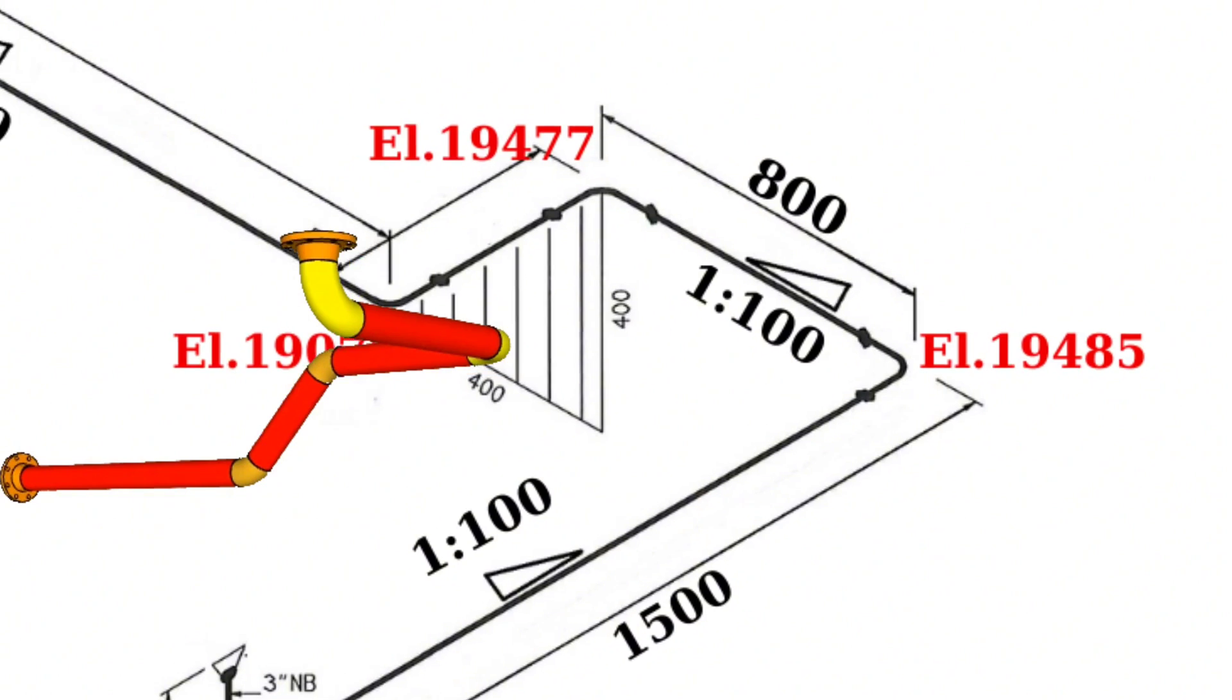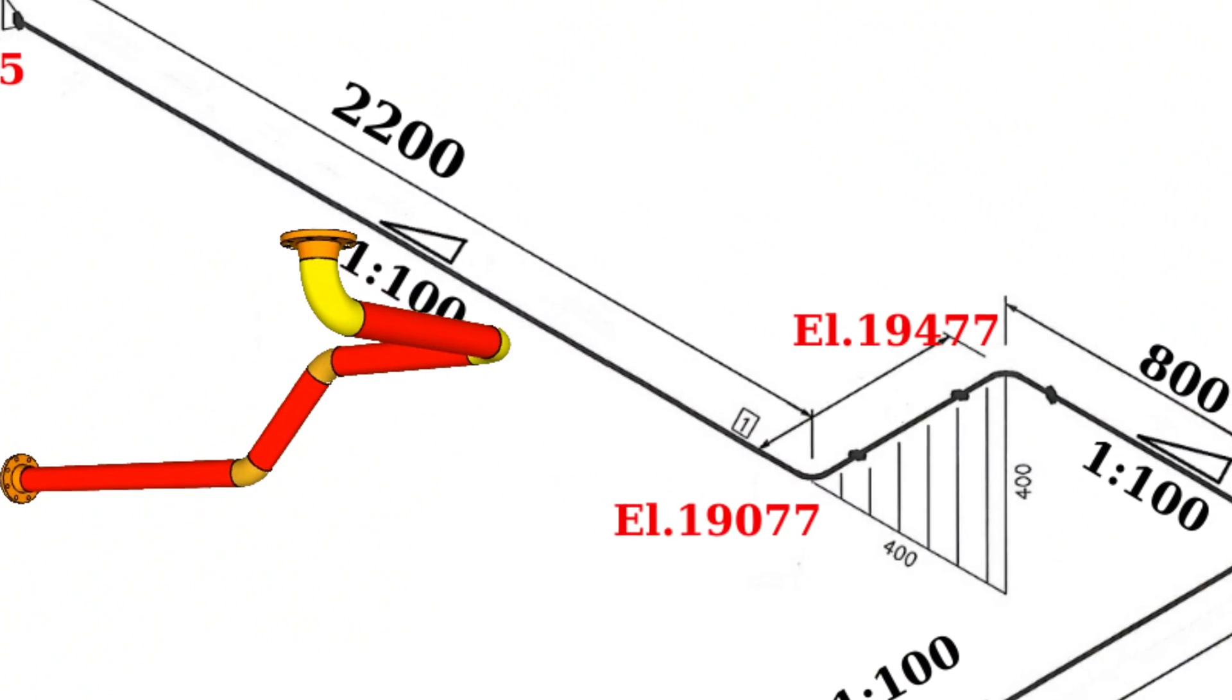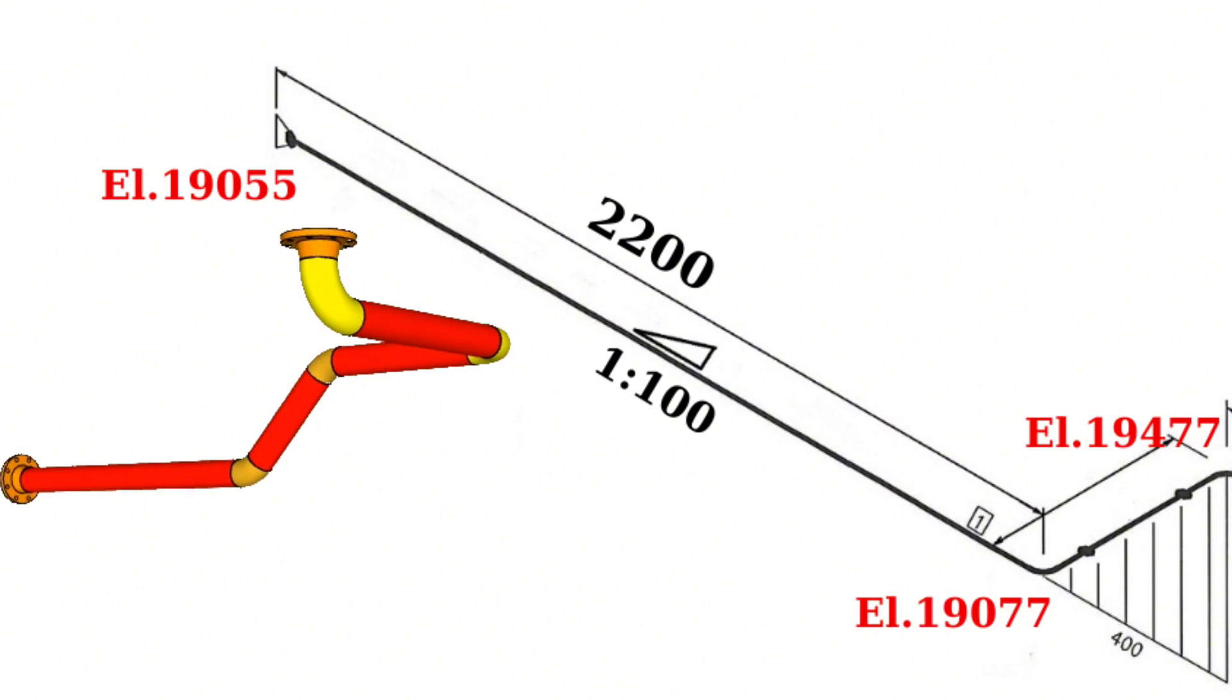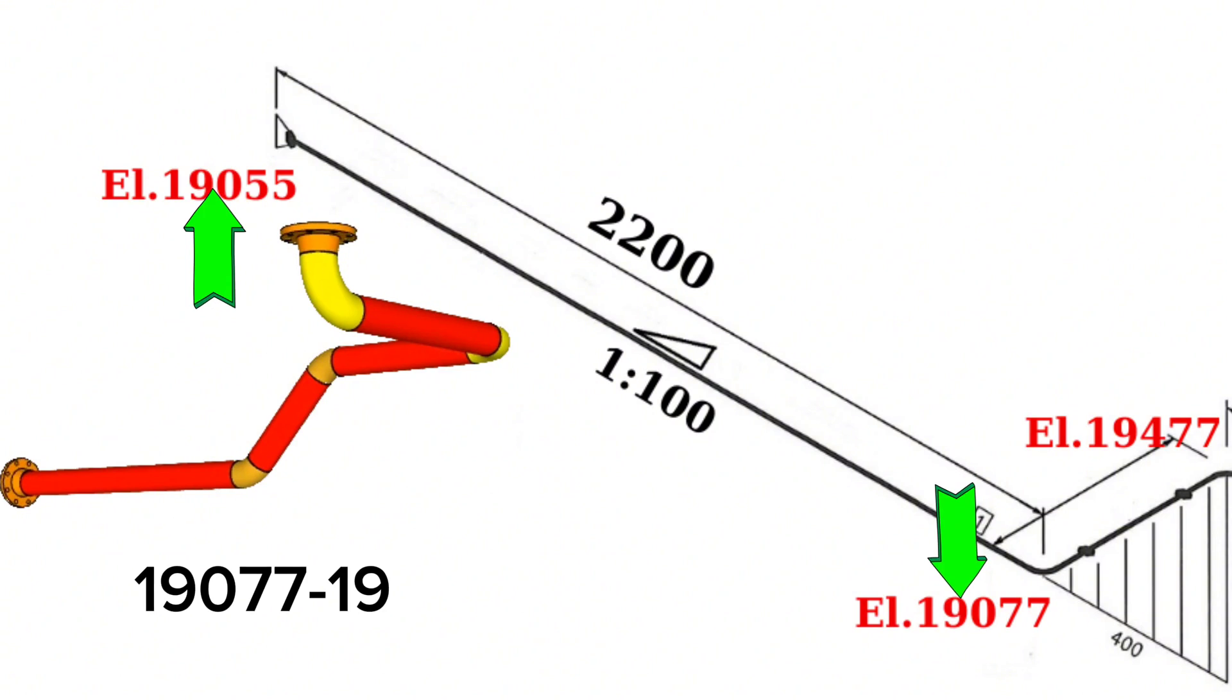With this method we can calculate the difference of the levels in the fourth and fifth rotations. Fourth elevation 19,077 millimeters minus fifth elevation 19,055 equals 22 millimeters.